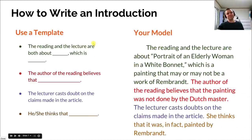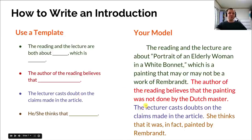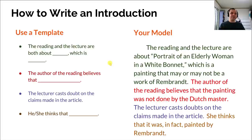Here's an example. 'The reading and the lecture are about a portrait of an elderly woman in a white bonnet, which is a painting that may or may not be a work of Rembrandt.' 'The author of the reading believes that the painting was not done by the Dutch master.' 'The lecturer casts doubt on the claims made in the article.' 'She thinks that it was, in fact, painted by Rembrandt.' That's how you do your first paragraph. The template allows you to write a sophisticated introduction quickly, and once memorized, those sentences will just come out fast on test day.